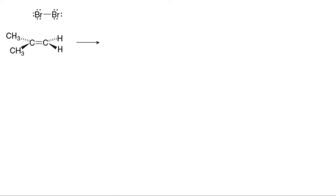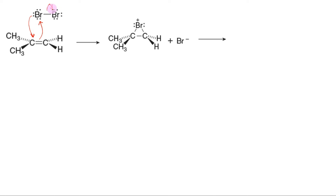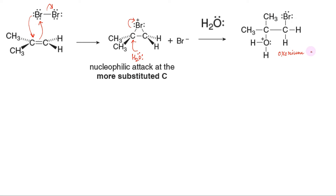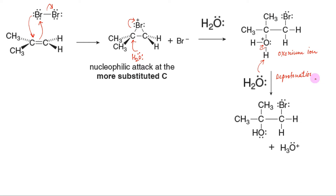The proposed mechanism for halohydrin formation can justify the observed regioselectivity. The first step is the same as in halogenation — that is, formation of the three-membered halonium ion. This is then captured by water rather than a halide anion as in halogenation, which opens the three-membered halonium ion on the more substituted side. The result is the oxonium ion, which is then deprotonated by water to form the halohydrin. In the end, halogen is attached to the less substituted carbon and hydroxyl to the more substituted carbon.